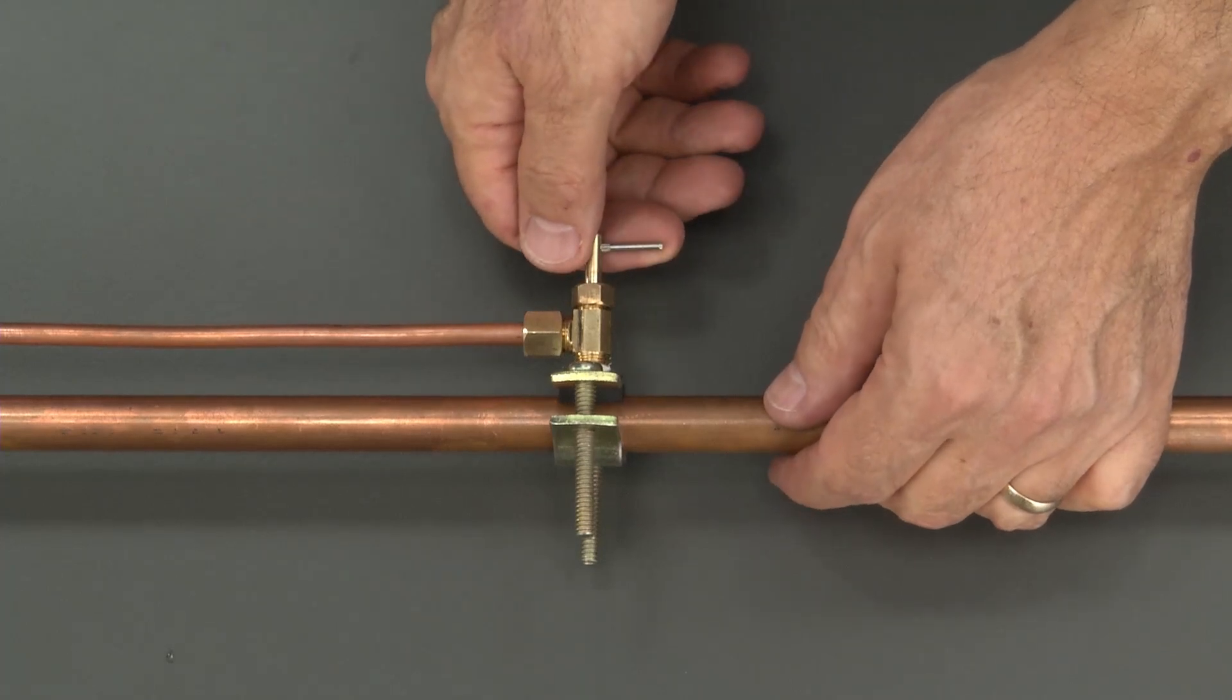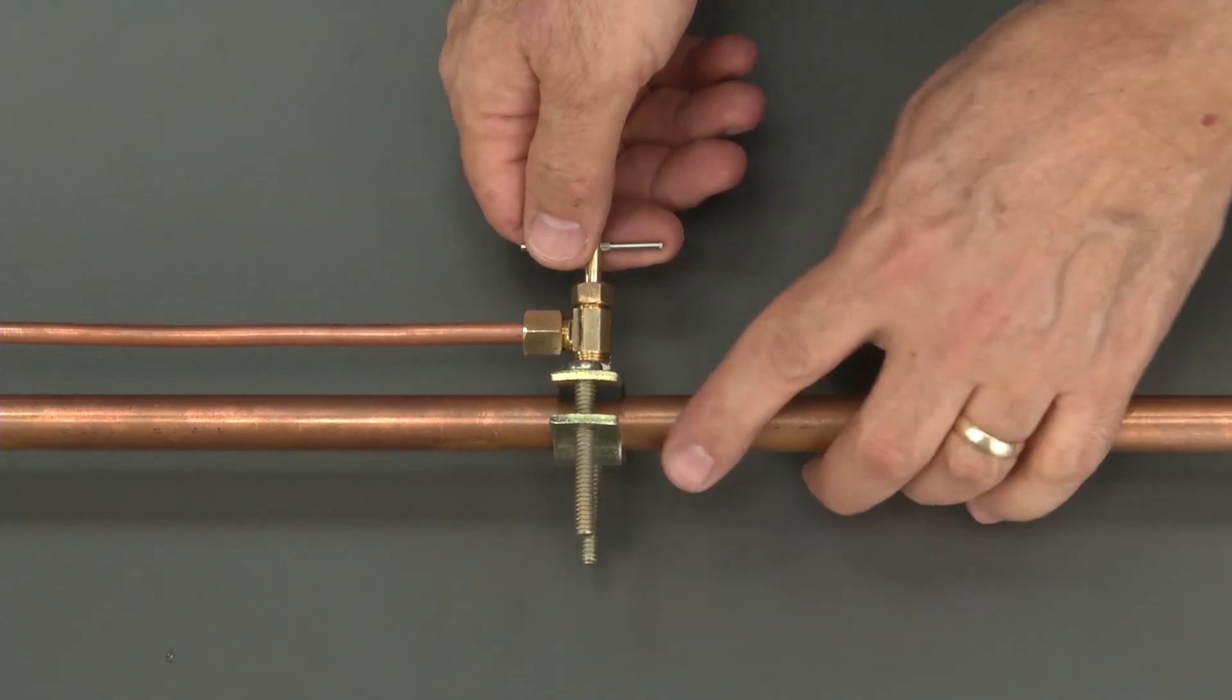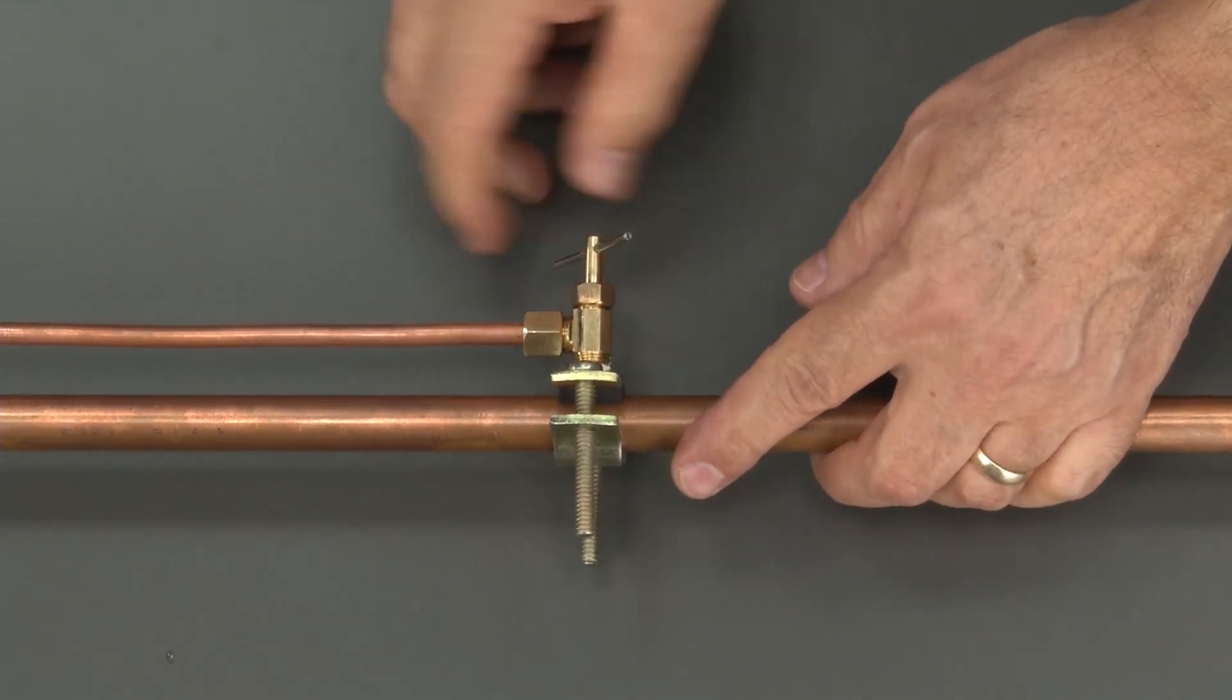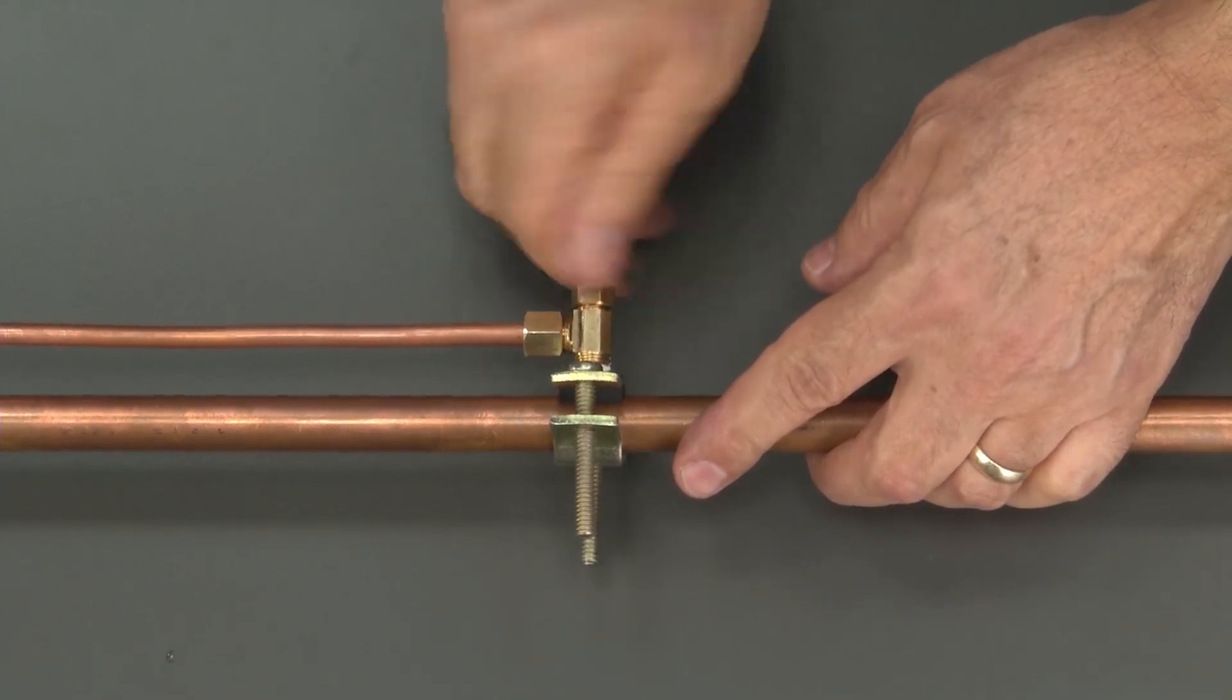Before performing this service, it is necessary to shut off the water. Find the saddle valve and turn it clockwise until it stops.